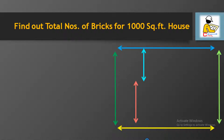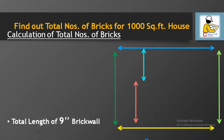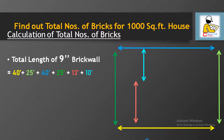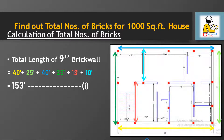You can see some colorful lines in the plan — these colored lines are used for easy notation of the 9 inch walls. We are adding all the colored lines one by one: yellow lines of 40 feet, green lines of 25 feet, blue line of 40 feet, and so on. After adding all dimensions, the total length of the 9 inch wall comes to 153 feet.